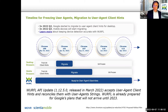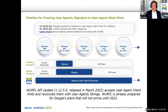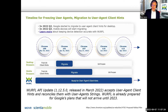But Google, because they have the power to do this, has decided to transition to a newer technology to replace this called user agent client hints. Instead of the request just sending information, it's more of a negotiation where the server has to ask for this information and the client responds back. User agent client hints are intended to replace most of the information that was originally found in the user agent string.